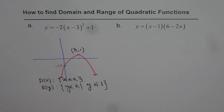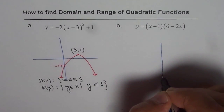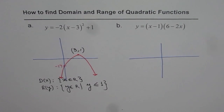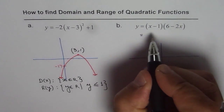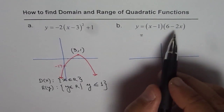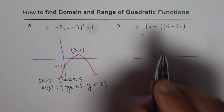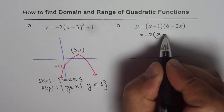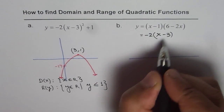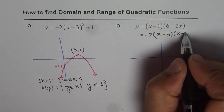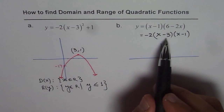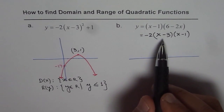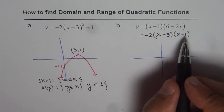Now let us look at the second equation, which is a parabola in factored form, so we know the x-intercepts. We can rewrite the equation by factoring minus 2 out of the term 6 minus 2x, giving us minus 2 times x minus 3. So the equation becomes minus 2 times x minus 3 times x minus 1. From this, we see the x-intercepts are at x equals 1 and x equals 3.